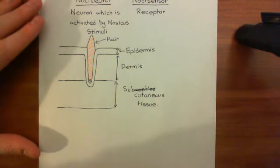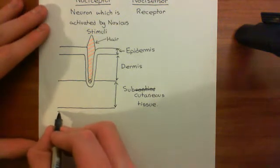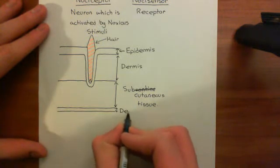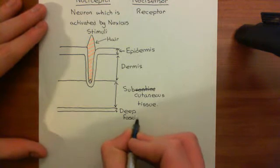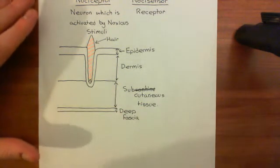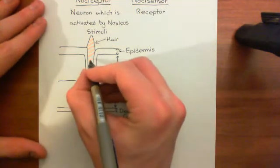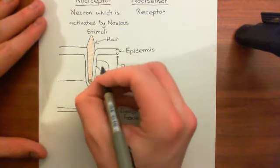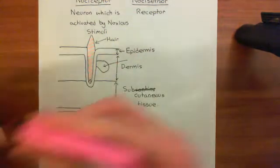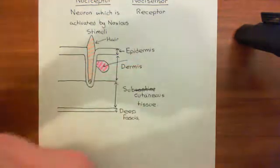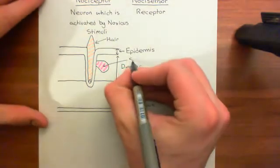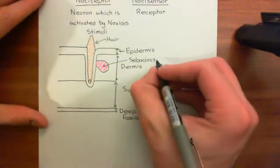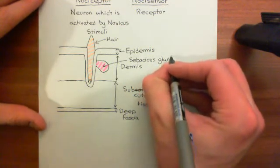Finally, underneath the subcutaneous tissue, you then have a very dense layer of connective tissue known as the deep fascia. Now, off the side of the hair follicle, you can often have sebaceous glands coming off the sides of the hair follicle. They will be secreting sebum into the hair follicle. This is a sebaceous gland. Sebum is a sort of oily substance which lubricates the skin — it's kind of like your inbuilt moisturizer.